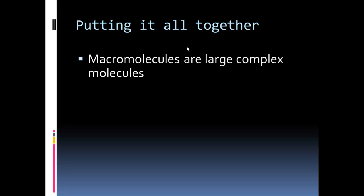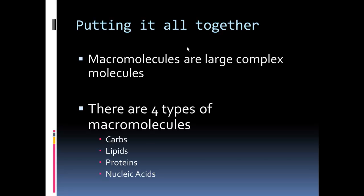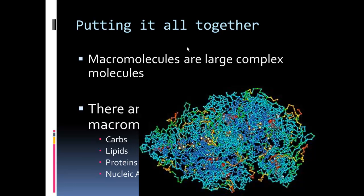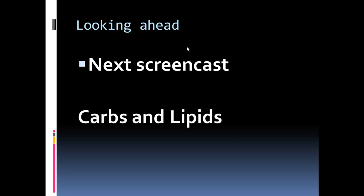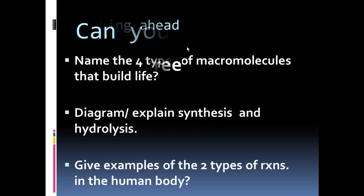So, what did we talk about? We talked about macromolecules are the large, big molecules that make up life. And there are four types that we will study. Carbs, lipids, proteins, and nucleic acids. They're going to be big, complicated molecules. Looking ahead, next screencast, we're going to consider carbohydrates and lipids. And, at the end of this, you should be able to name, comfortably list out, the four groups of macromolecules, and diagram and explain synthesis and hydrolysis, and provide examples of these reactions in the human body.